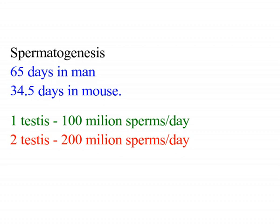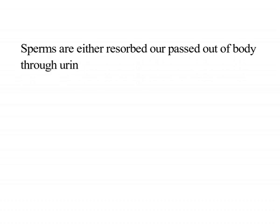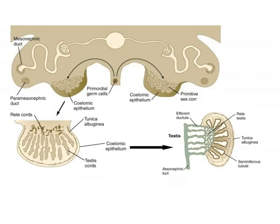Humans produce about 200 million sperms per day, or about 10^12 to 10^13 sperms in a lifetime. Sperms are either resorbed or passed out of the body through urine if not ejaculated. Sperms are the male gametes formed in the male gonad called testes.